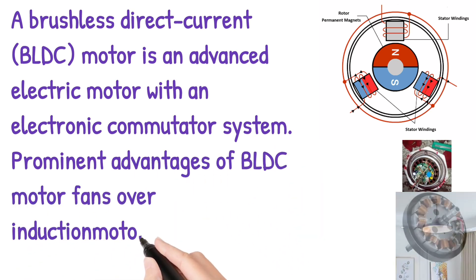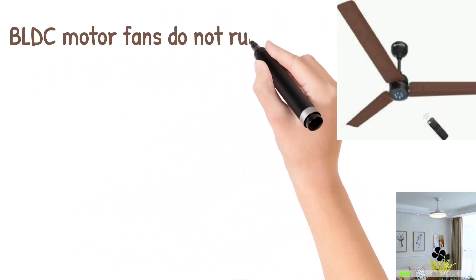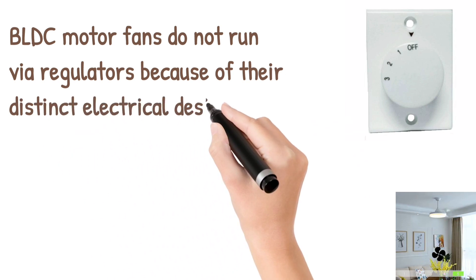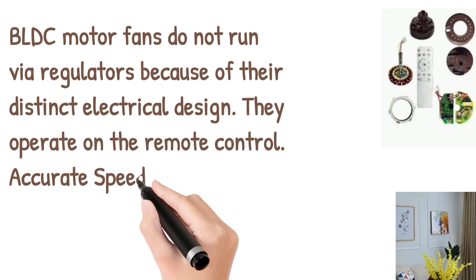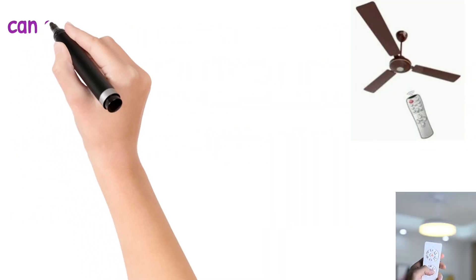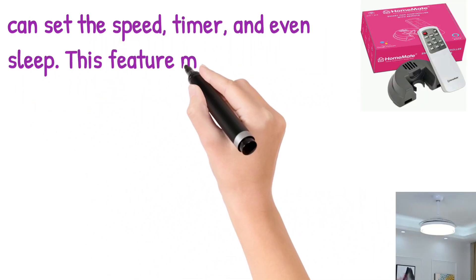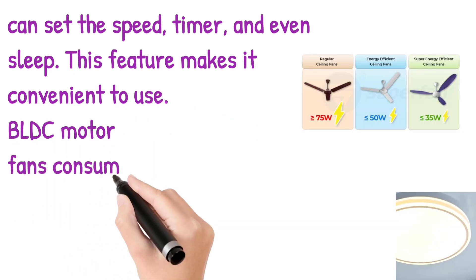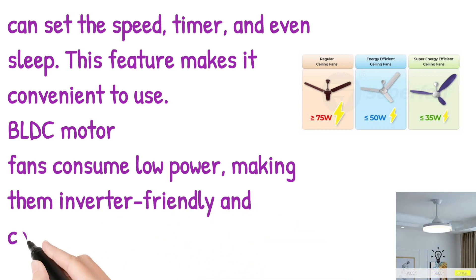Prominent advantages of BLDC motor fans over induction motor fans are: BLDC motor fans do not run on wire regulators because of their distinct electrical design. They operate on remote control — accurate speed control with the help of the remote. You can set the speed, timer, and even sleep mode, making it convenient to use.